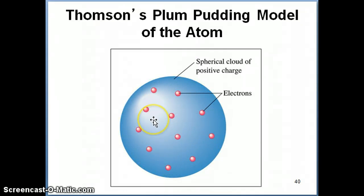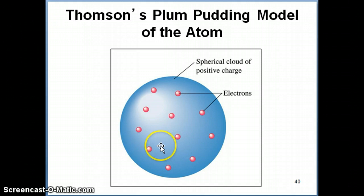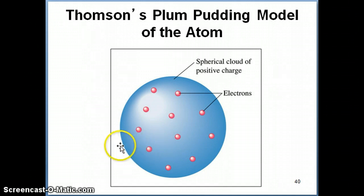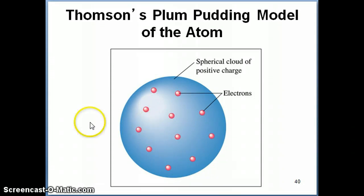So if you imagine looking up into the sky and seeing clouds, and then here and there sometimes you see an airplane flying through the clouds — that's sort of like the plum pudding model. You have this cloud of positive charge, and in it you see bits of electron objects — electrons distributed in the atom. So that's the plum pudding model.